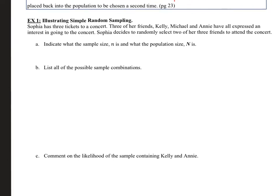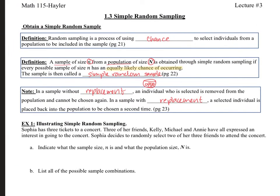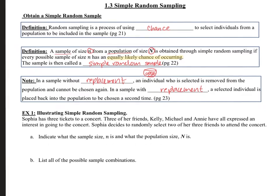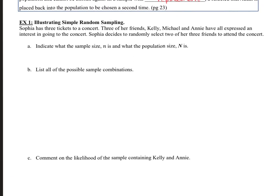In a sample without replacement, that means you're taking them out and your sample size is slowly dwindling. An individual who's selected is removed from the population and cannot be chosen again. In a sample with replacement, a selected individual is placed back into the population to be chosen a second time. Possibly. Let's go ahead and take a look at the one example for this section.